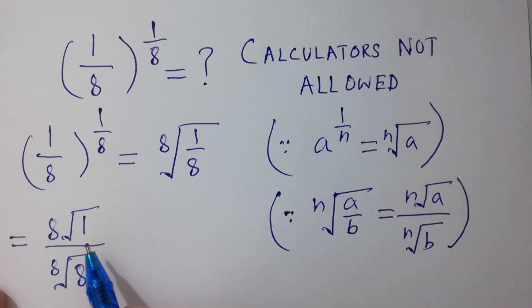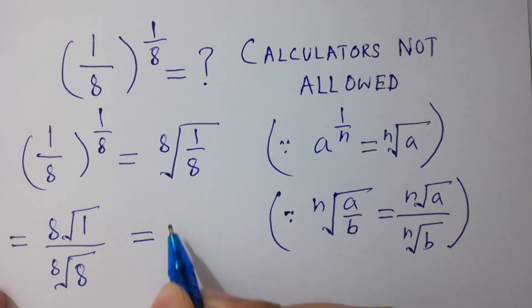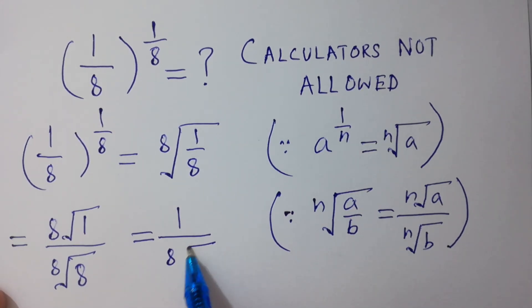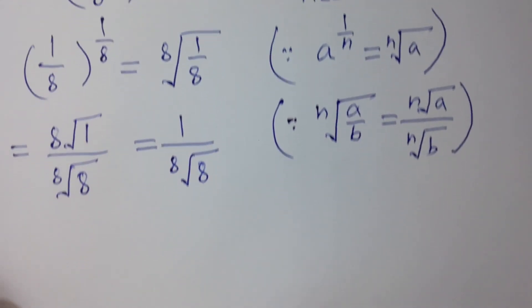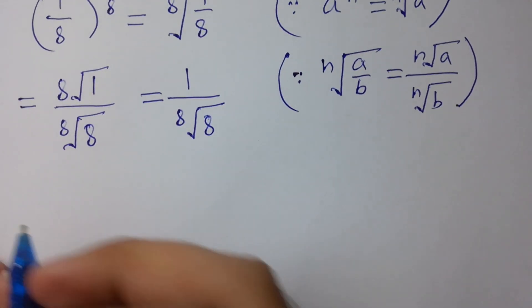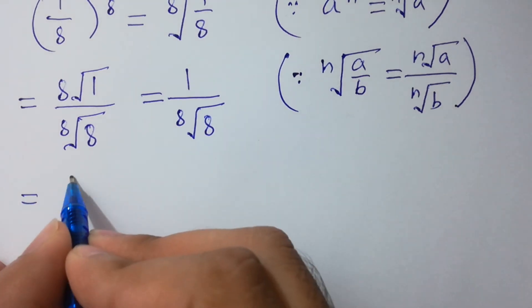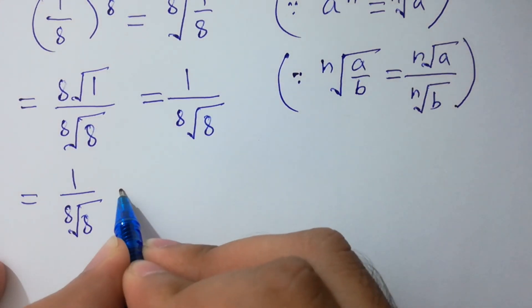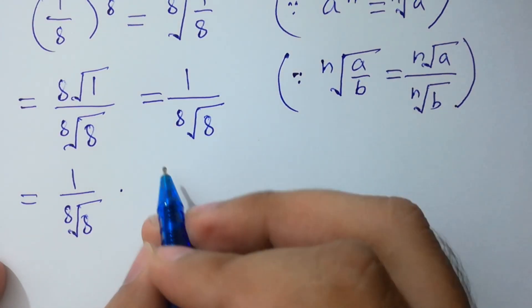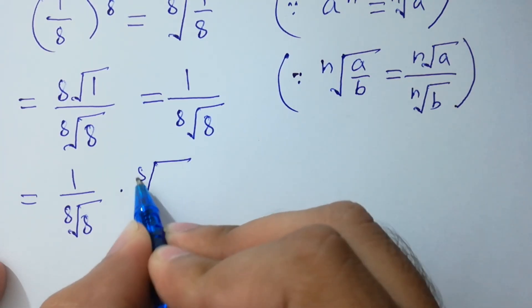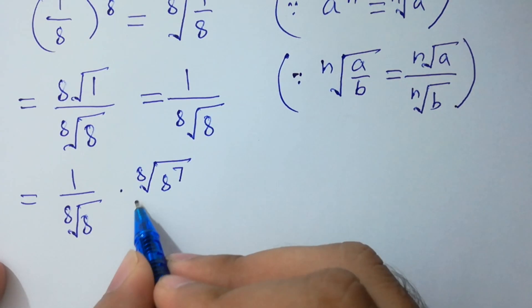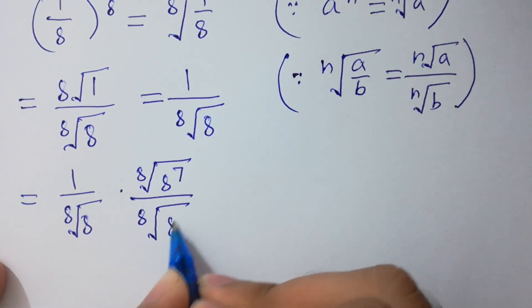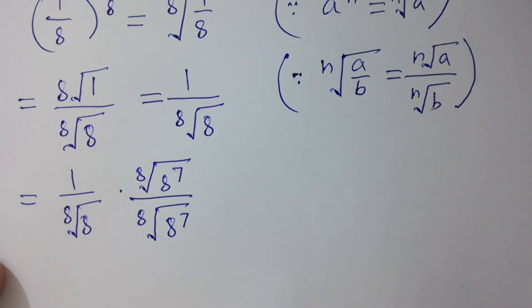Here, the 8th root of 1 equals 1, so we have 1 over the 8th root of 8. In the next step, we can multiply by the 8th root of 8 to the power 7 over the 8th root of 8 to the power 7, to simplify it faster.